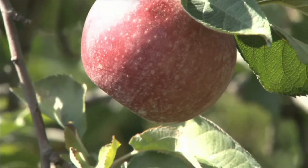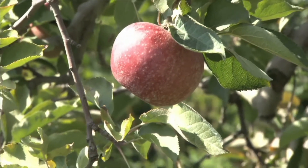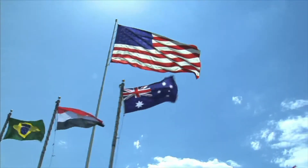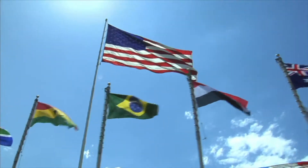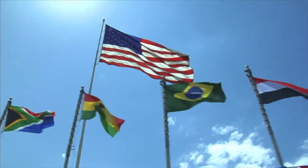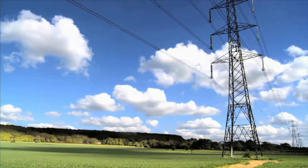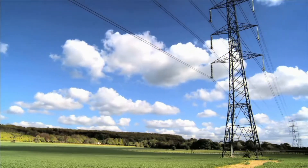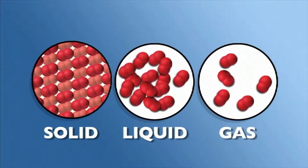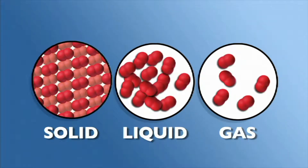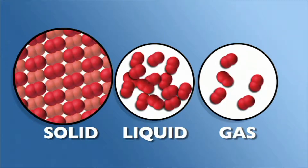The mass of an object depends on the amount of matter composing it. Everything is made of matter. Matter is anything that takes up space. Therefore, anything that takes up space has mass. The molecules, or matter in any solid object, are dense and grouped closely together.